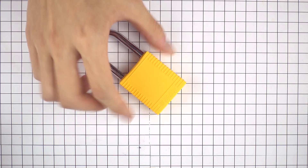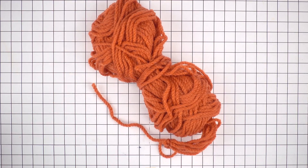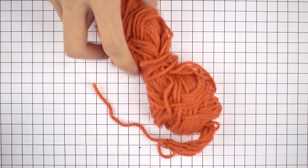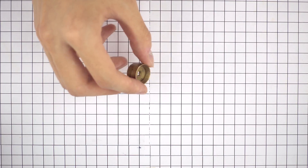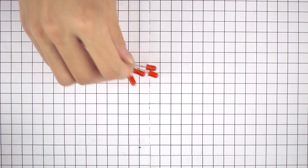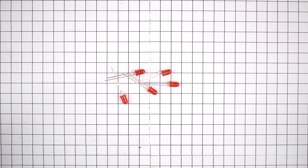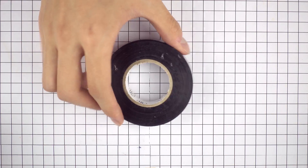The materials that we will use include a heavyweight — in this case I'm using a lock — some string, a lightweight — in this case a small brass piece that I found — small LEDs, button cells, and electrical tape.